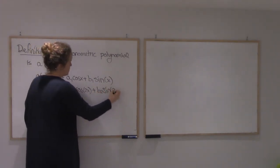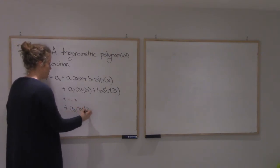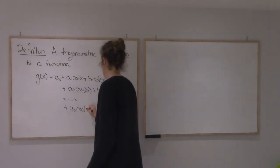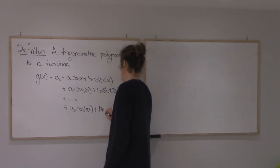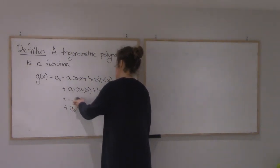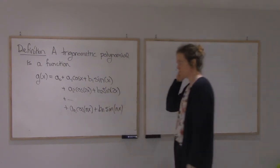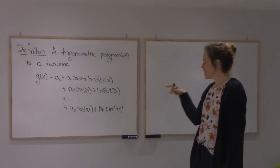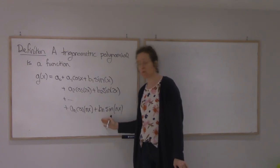At some point we'll have to stop. Cosine nx plus bn sine nx. So this will be a trigonometric polynomial, and if one of these, either an or bn are not zero, then the degree will be n.